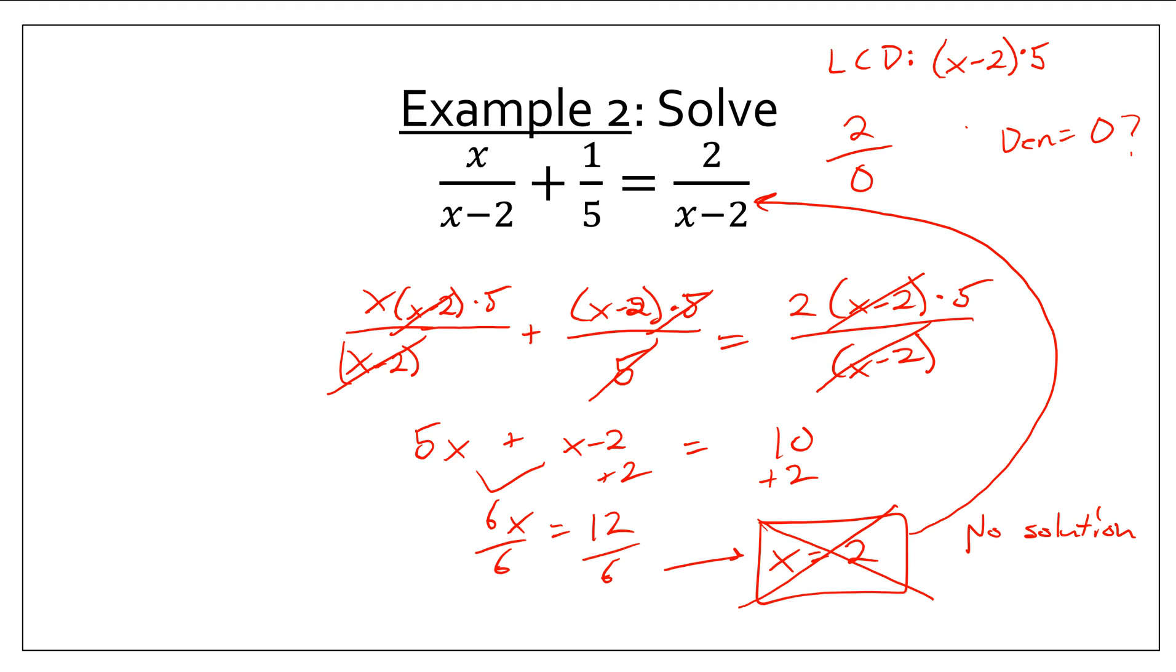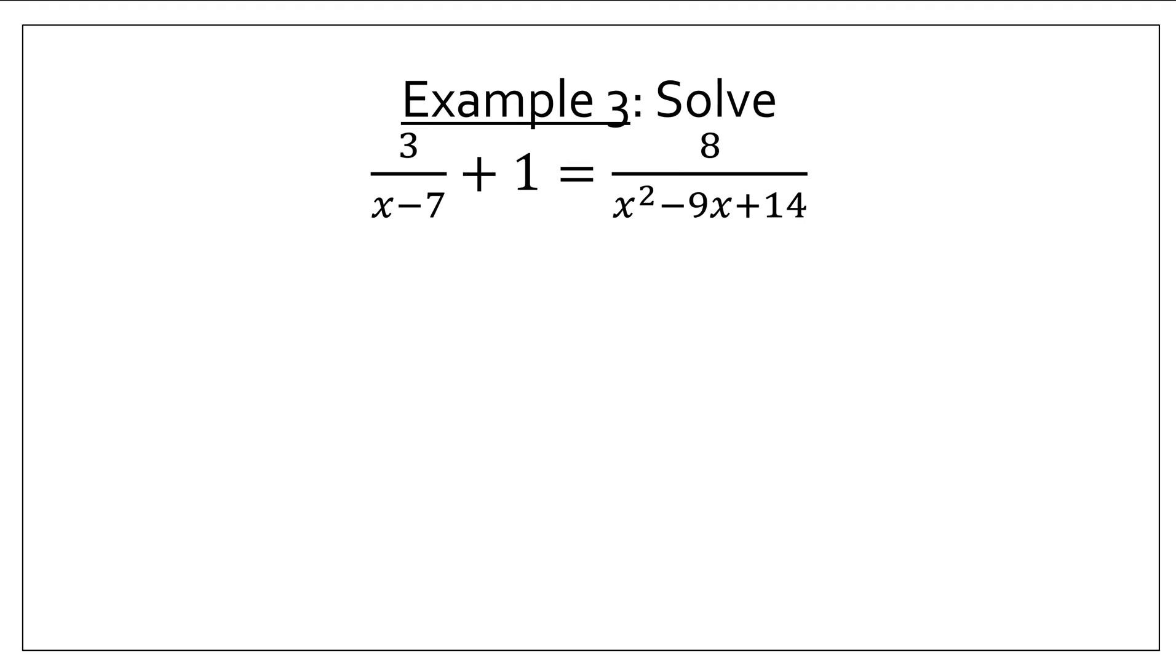So, this is an extraneous solution, which means there's actually no solution here. It looks like a solution, but when I plug it back in, it results in a denominator of 0. And that's not good. We just have one more example for the whole year. This is bittersweet for me. This will be a good one.